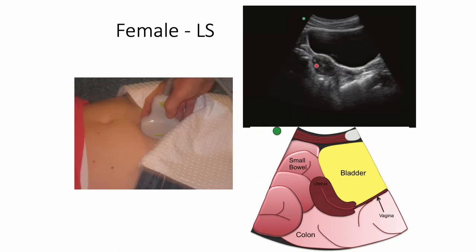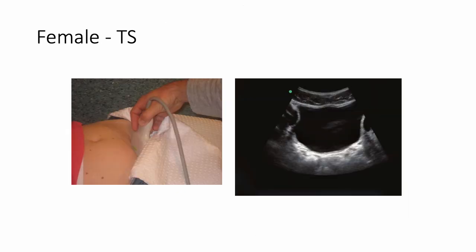For the female longitudinal section, you see the triangular urinary bladder, the uterus structure, and behind it the rectum — free fluid will start to accumulate in this position. For the transverse section, which is nearly similar between male and female, you will have the urinary bladder and free fluid will start to accumulate around it.